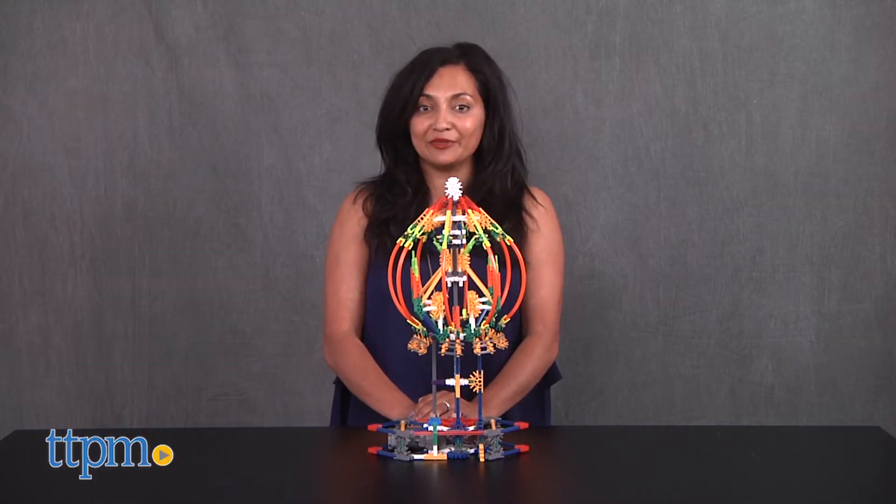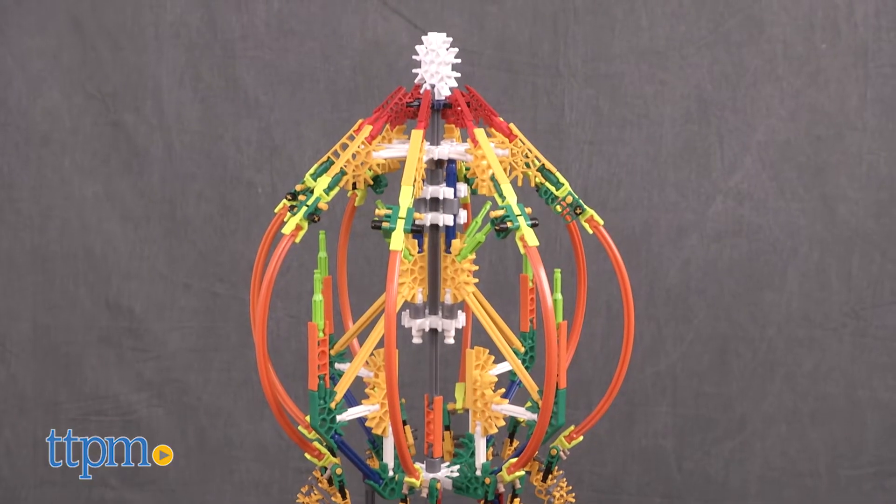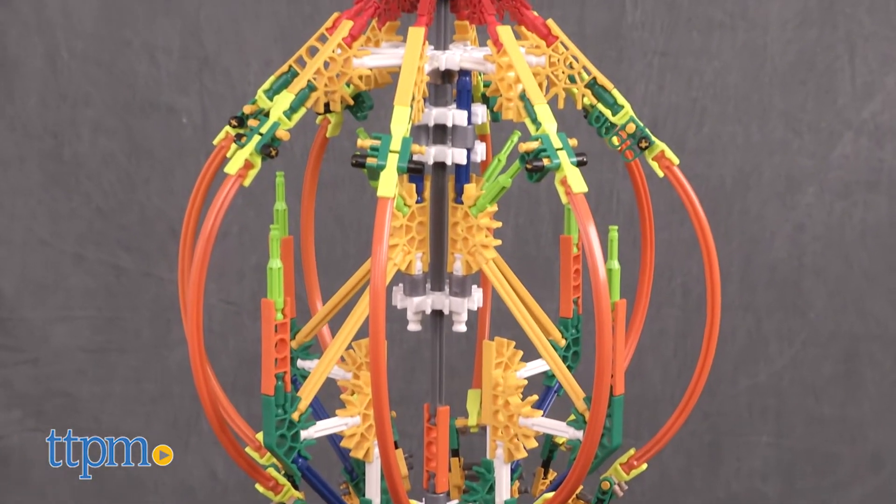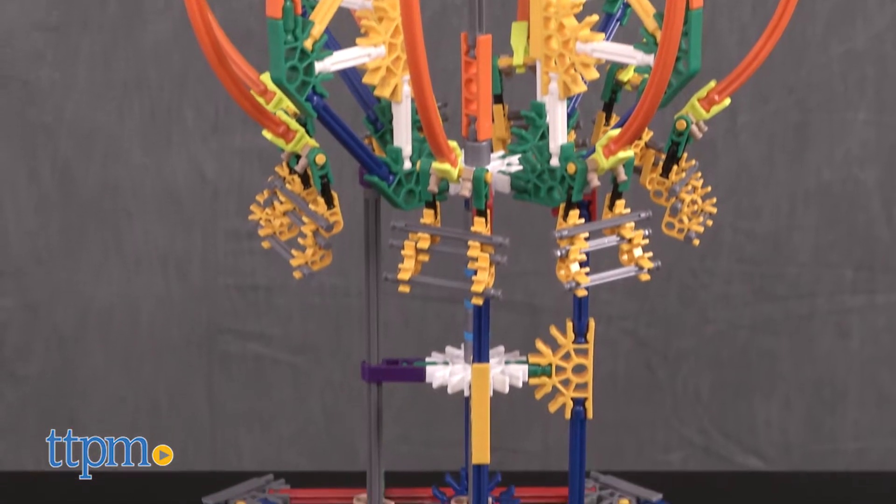Here we have the STEM Exploration Swing Ride Building Set. This is a 486 piece building set that includes a motor to make your structures move.